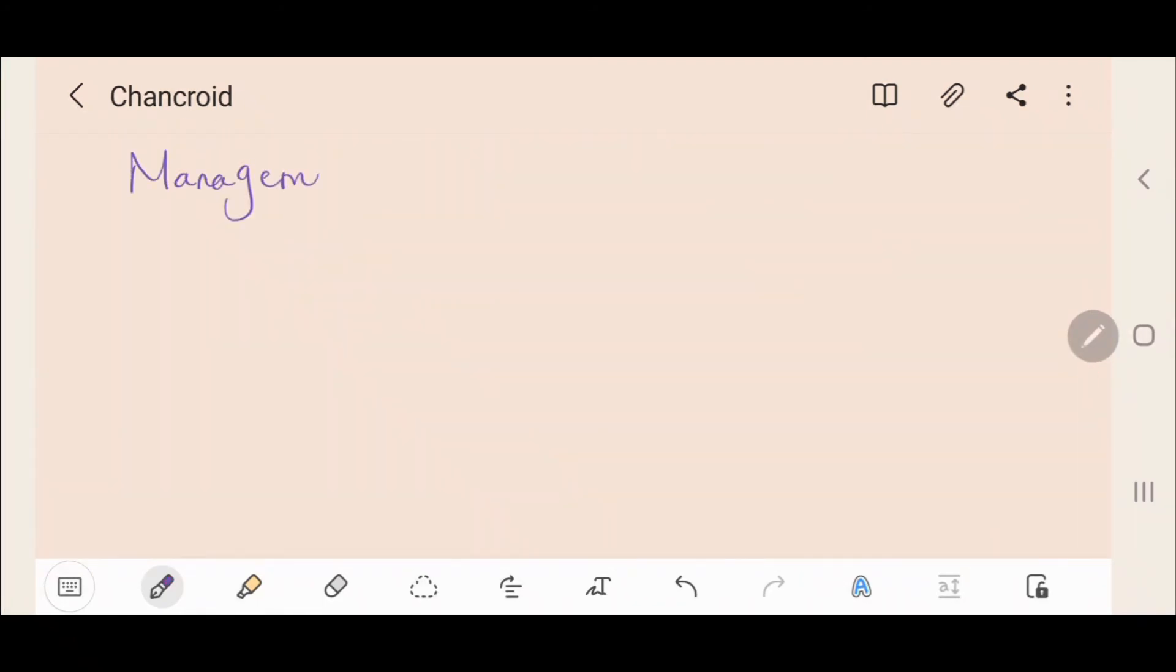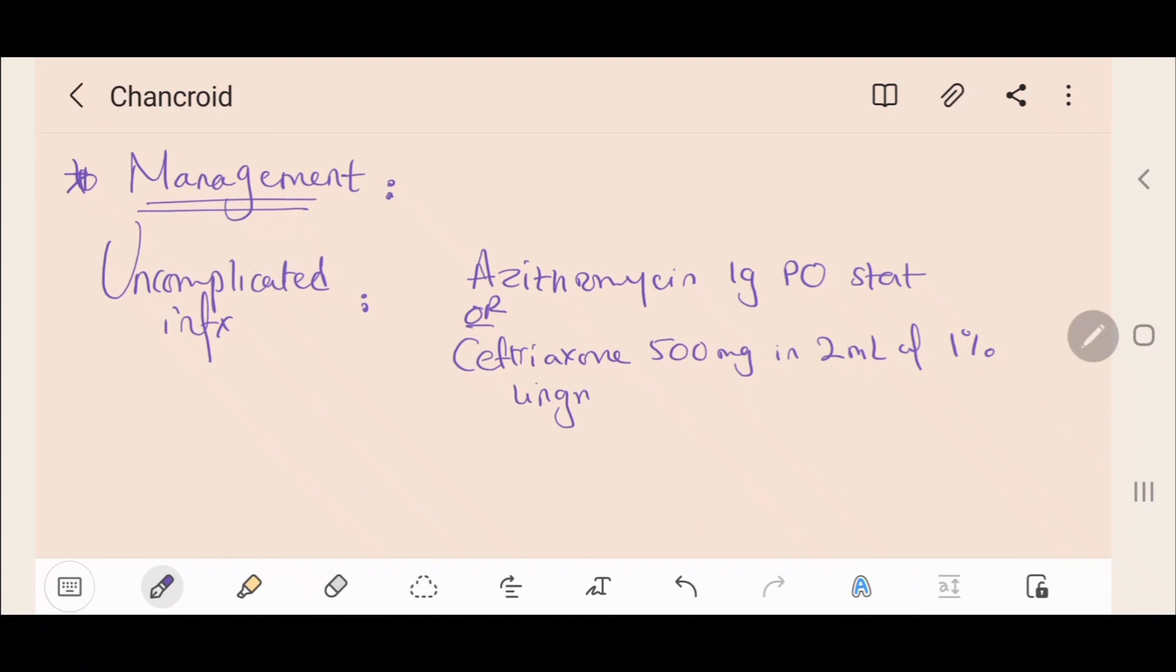As for the management of chancroid, always seek specialist advice before treating. For uncomplicated infection, use azithromycin 1g orally STAT, or ceftriaxone 500mg in 2ml of 1% lignocaine IM STAT, or ciprofloxacin 500mg orally twice a day for 3 days. Most patients respond to single dose regimens. However, HIV positive patients may require longer courses.